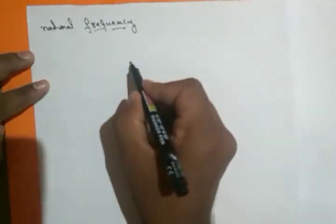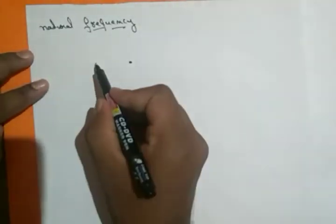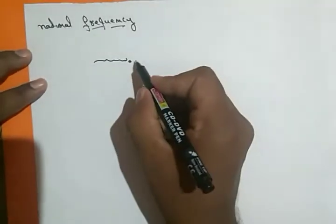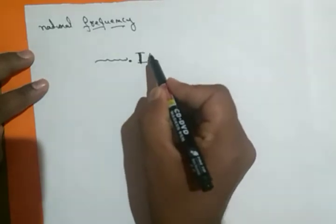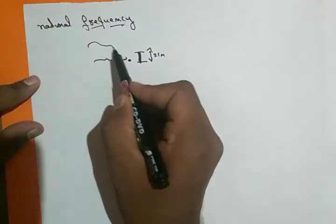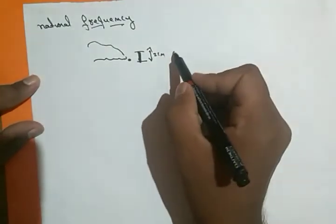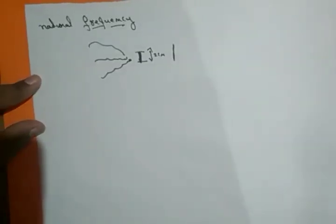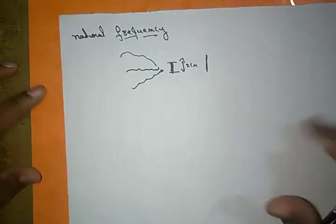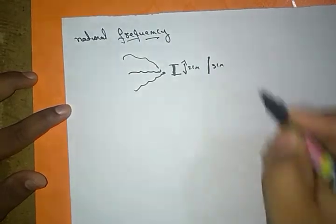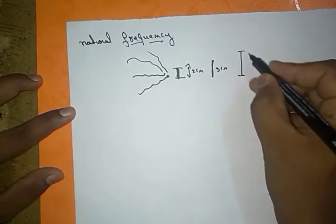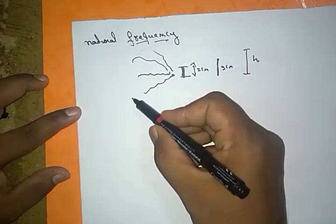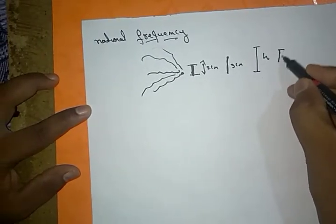Let us assume one particle. If you apply one frequency, the particle vibrates. The amplitude, let us assume as an example, is 2 centimetres. Next, if it is a higher frequency, the amplitude increases. So as the frequency increases, the amplitude increases — for example, 3 centimetres, then 4 centimetres of vibration.